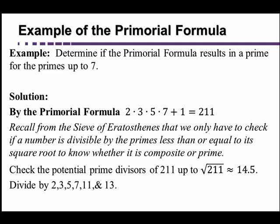If any of them divides 211, then it's composite. If none of them do, then we know it's prime. In this case, if you go through it and just divide it out, you'll find none of them goes in evenly, so 211 is prime.